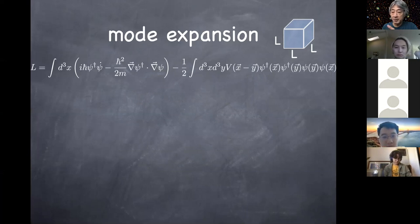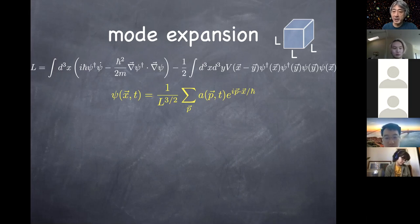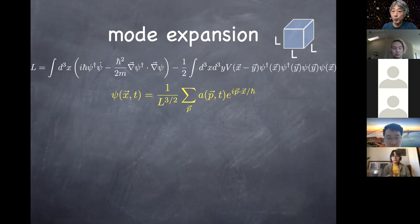There is also a way of describing in momentum space by simply doing a Fourier transform. This field psi is a function of position and time, and we do the Fourier transform — in this case we call it the mode expansion in momentum space. What I'm doing here is putting the system into a box, a cube of each side being L, so the volume is L cubed, with periodic boundary conditions — left and right, bottom and top, front and back.